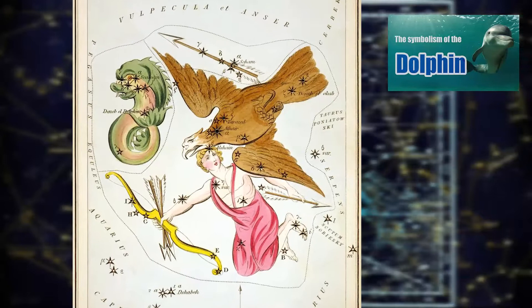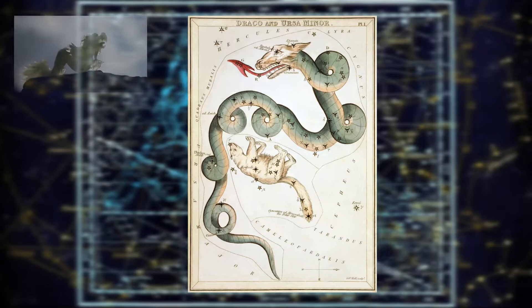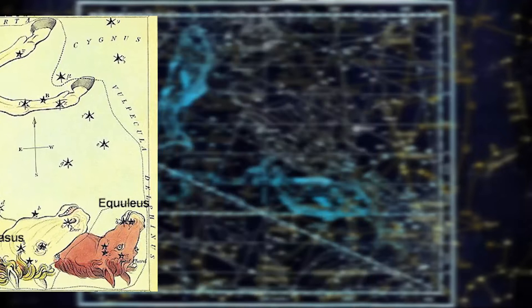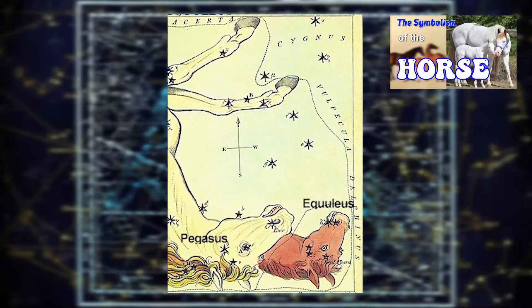Draco, the Dragon. We have a video in the playlist for this constellation: The Dragon of Wantley. Equuleus, the Horse or Pony. We have a video in the playlist for this constellation: The Symbolism of the Horse.